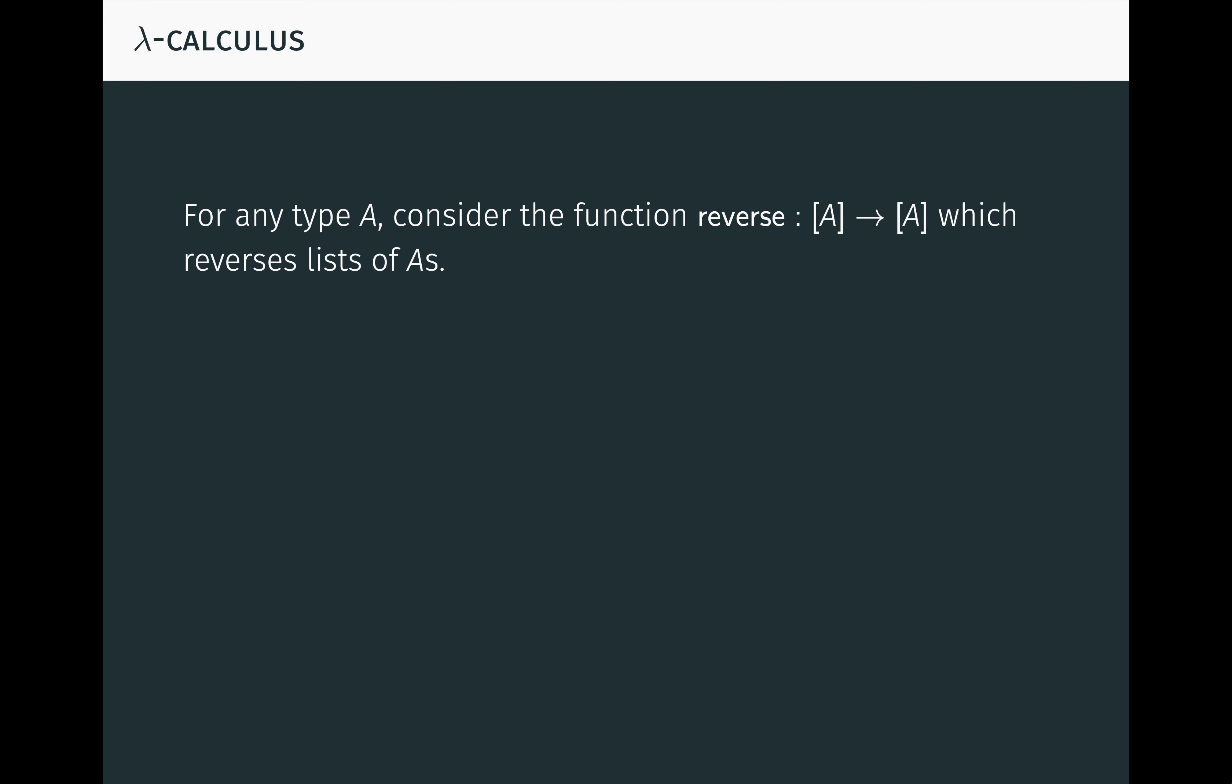As a simple example, for any type A, consider the function reverse, which reverses lists of A's. Here's an illustration in Haskell where we're reversing a list of numbers. This line of code evaluates to true.